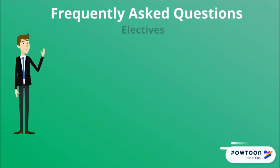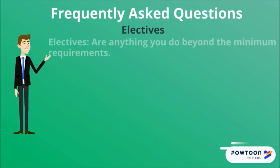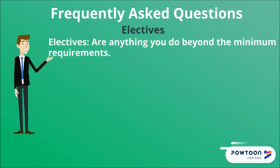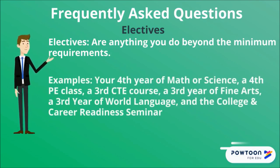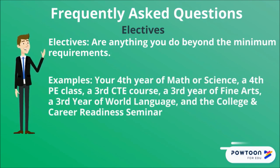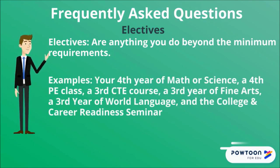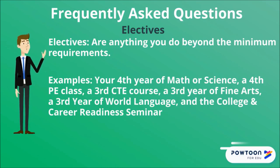Let's clear up some common areas of confusion. What are electives? Electives are anything you do beyond the minimum. This means your fourth year of math or science, a fourth PE class, a third CTE course, or a third year of world language will all count as electives and help you meet this requirement.